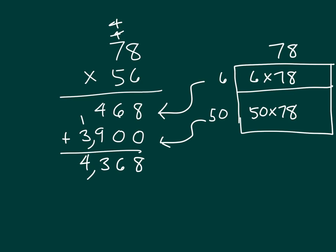So we do go through those steps where we're looking at 78 times that first digit. And then 78 times that next digit, which is in the tens place. And that's why we put that zero there. So that's the standard algorithm then for two-digit by two-digit multiplication.